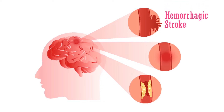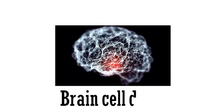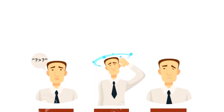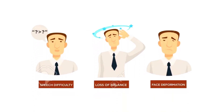The first way is due to burst of an artery. The second is due to ischemia. And the third is due to atherosclerosis. Brain cells die during a stroke because they do not get enough oxygen. Stroke can cause serious disabilities in speech, movement, and other basic activities.